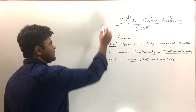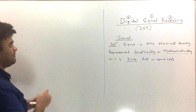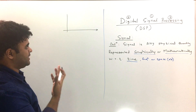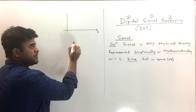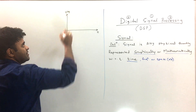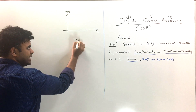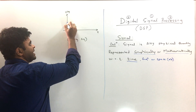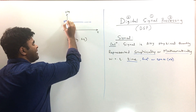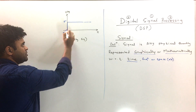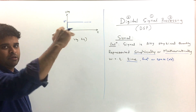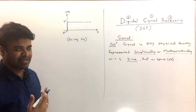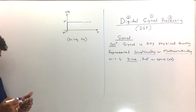Let's take the first example. I'm drawing a graph with time 't' on the horizontal axis and voltage on the vertical axis — this becomes a time-versus-voltage graph, and this is a voltage signal. The graph shows that from t = 0 onwards, the voltage is constant at, say, 5 volts. So a DC voltage is one example of a signal, and this graph is a graphical representation.